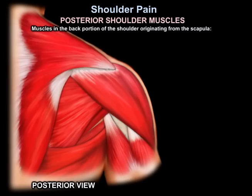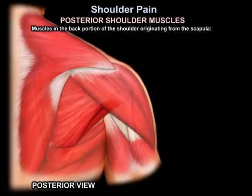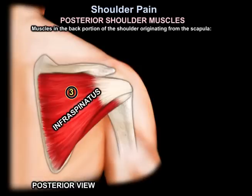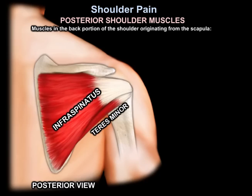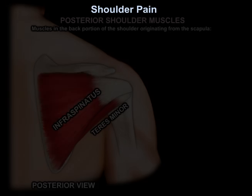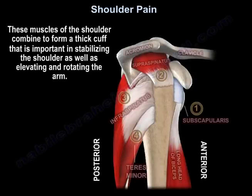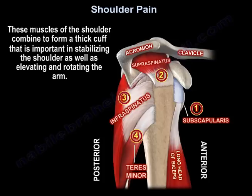From the back, or posterior position, the muscles of the shoulder joint include the infraspinatus and the teres minor muscles. These muscles of the shoulder combine to form a thick cuff, important in stabilizing the shoulder as well as elevating and rotating the arm.